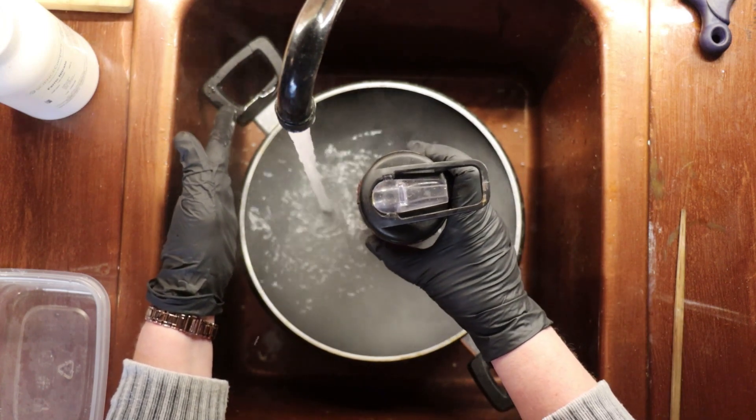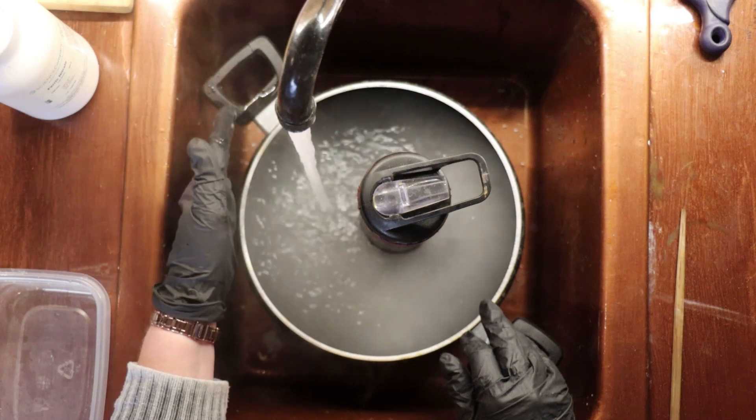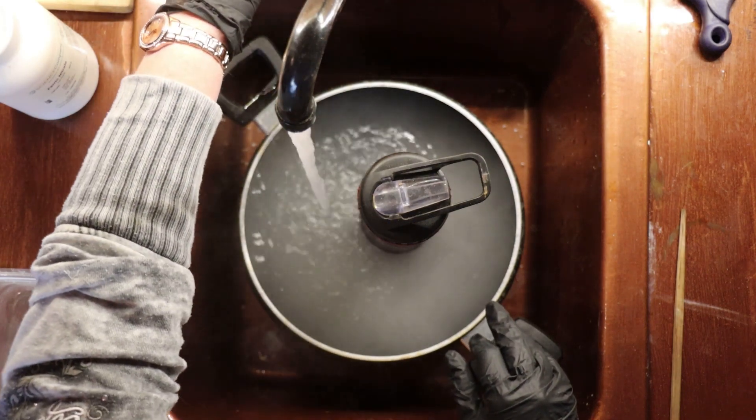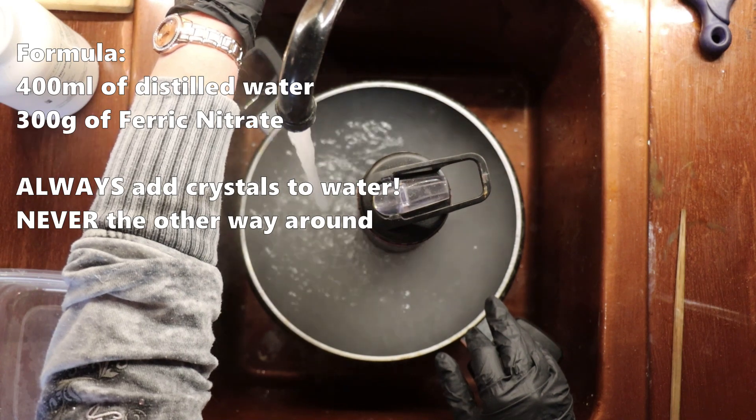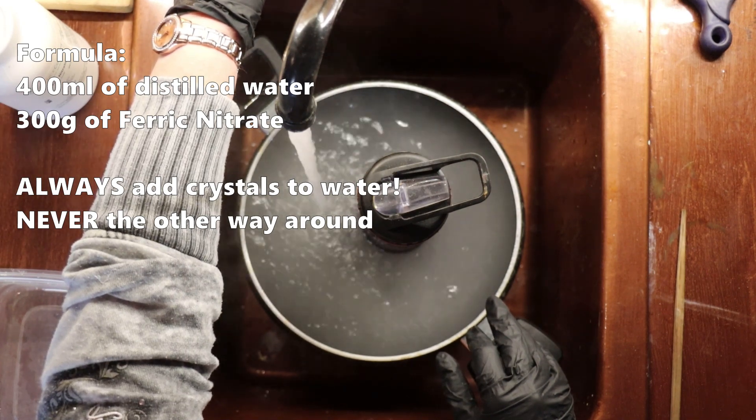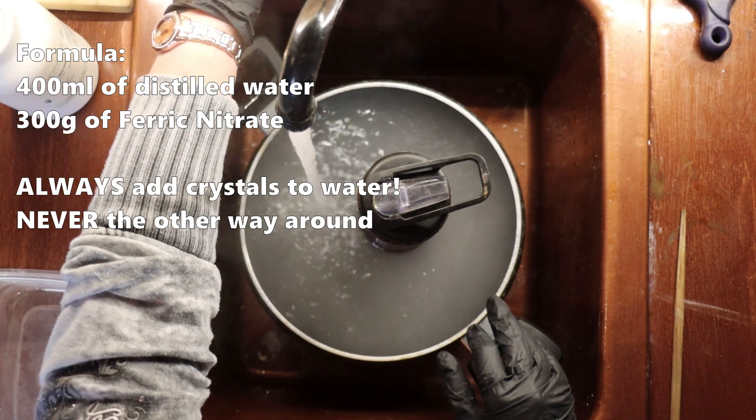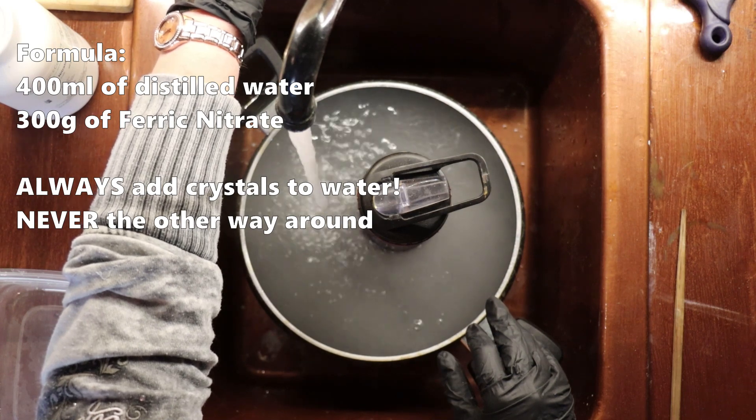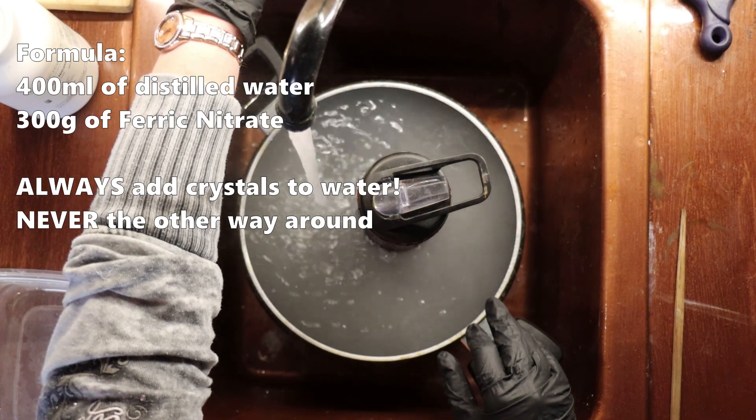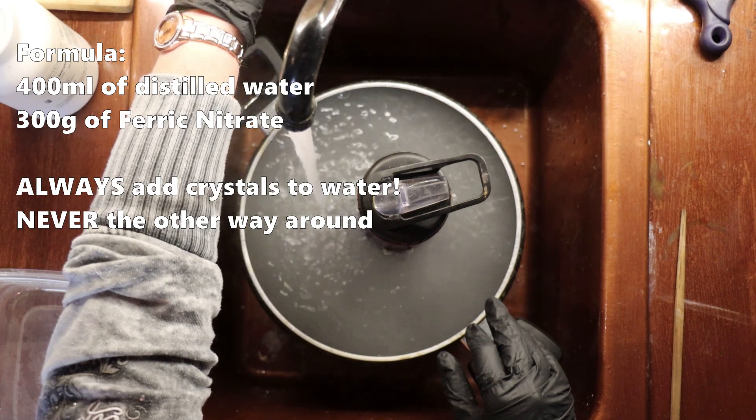I didn't mention this earlier, but the formula that I use for the etching solution is 400 milliliters of distilled water to 300 grams of the ferric nitrate. You always want to add the crystals to the water, never the other way around.